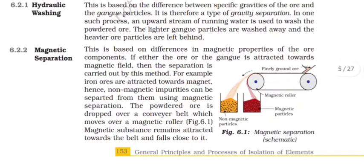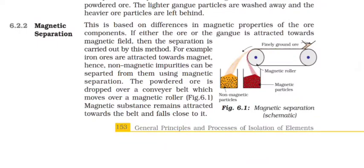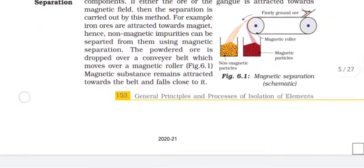Magnetic separation. This process is based on the differences in magnetic properties of the ore components. If either the ore or the gangue is attracted towards magnetic field, then the separation is carried out by this method. For example, iron ores are attracted towards magnet, hence non-magnetic impurities can be separated from them using magnetic separation. The powdered ore is dropped over a conveyor belt, which moves over a magnetic roller. Magnetic substances remain attracted towards the belt and fall close to it.